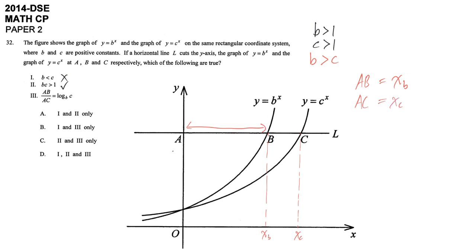So now we are going to put it inside to the function. It's because the heights are the same. So b power of x_b is equal to c power of x_c, the corresponding x.